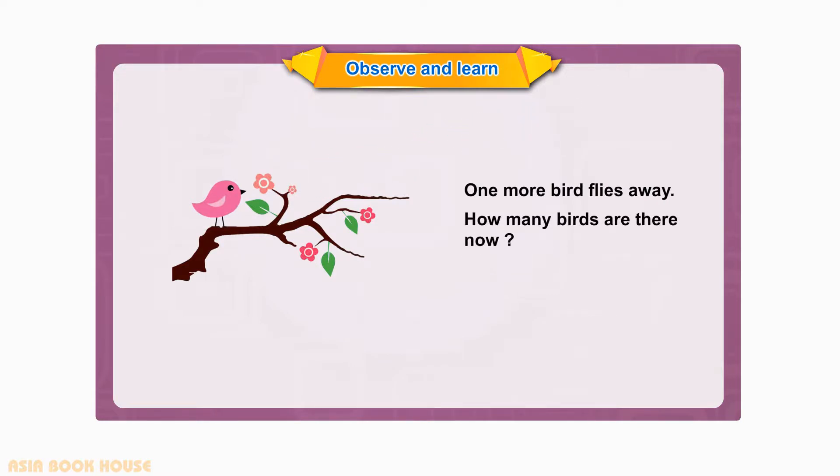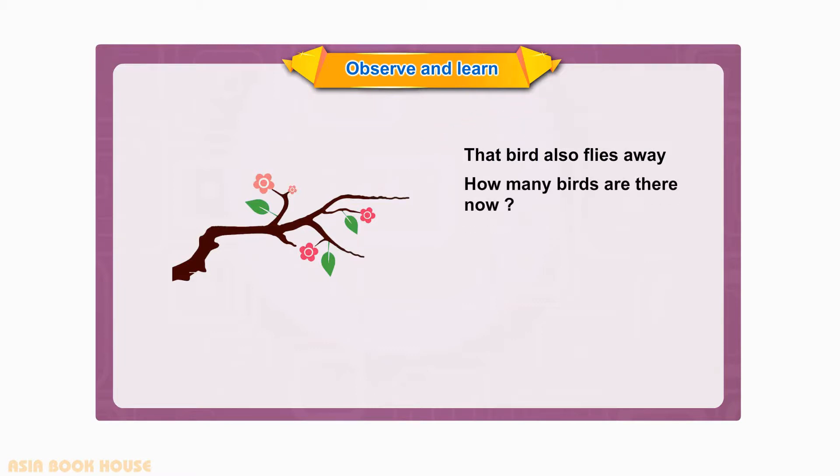How many birds are there now? One. That bird also flies away. How many birds are there now? There are no birds on the tree now. There are zero birds. No birds is equal to zero birds. Read as zero birds.